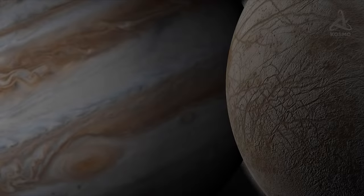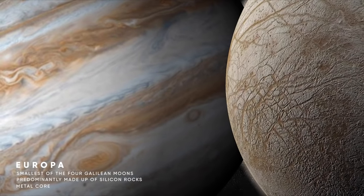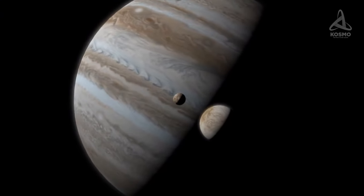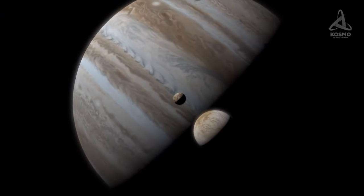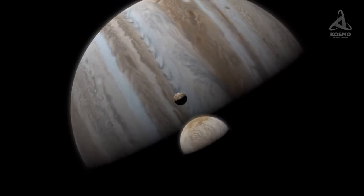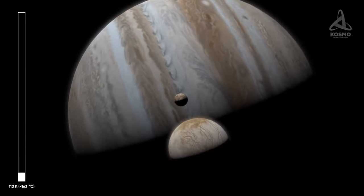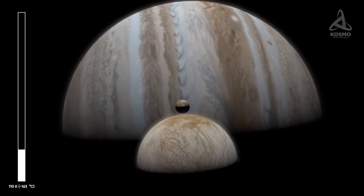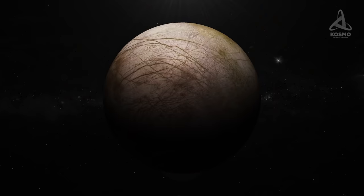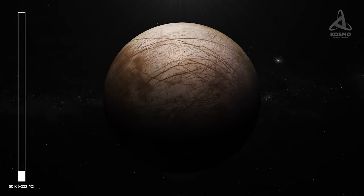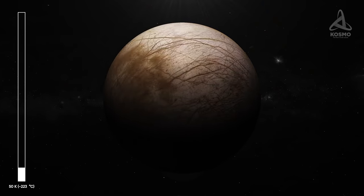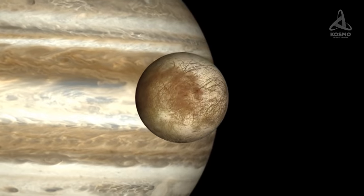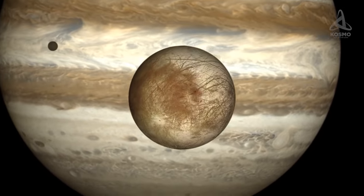The most promising of Jupiter's satellites in terms of searching for alien life is Europa. The smallest of Jupiter's four Galilean moons, it is just a bit smaller than our moon. The equatorial temperature on this celestial body is 110 Kelvin or 163 degrees Celsius below zero. At the poles, temperatures may drop to 50 Kelvin or 223 degrees Celsius below zero.